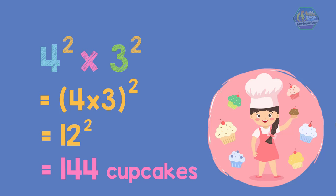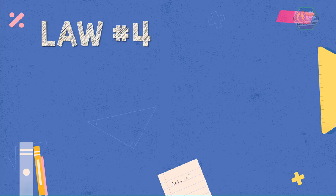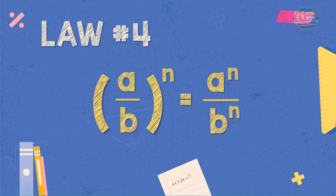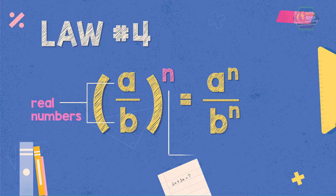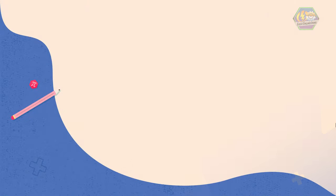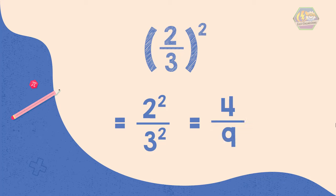Now let's proceed to Law 4. The fraction A over B raised to the power of N is equal to A raised to the power of N divided by B raised to the power of N, where A and B are real numbers and N is a positive integer. This law means that the exponent can be distributed to the numerator and denominator. For example, 2 thirds raised to the power of 2 will become 2 raised to the power of 2 divided by 3 raised to the power of 2. Therefore, the answer is 4 over 9.